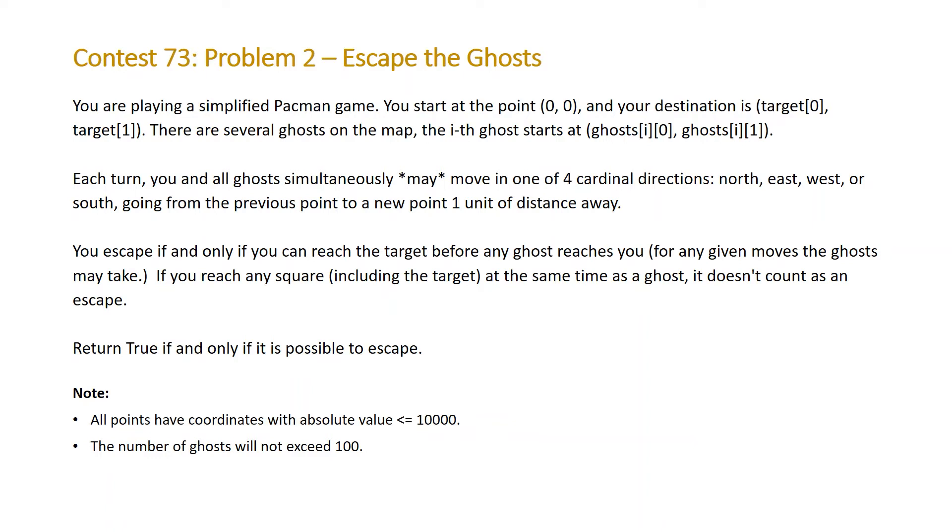Each turn, you and all ghosts simultaneously may move in one of the four cardinal directions, north, east, west, or south, going from the previous point to a new point 1 unit of distance away. You escape if and only if you can reach the target before any ghost reaches you, for any given moves the ghost may take. If you reach any square, including the target, at the same time as a ghost, it doesn't count as an escape. Return true if and only if it is possible to escape.